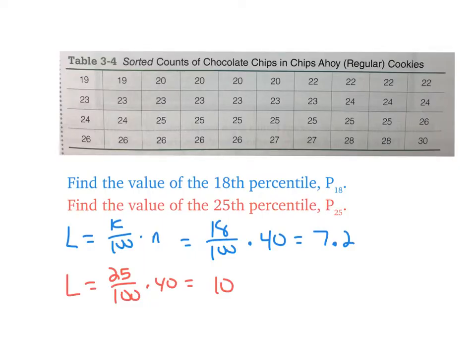Okay, this one says find the 18th percentile using the same chart. So I did 18 over 100 times 40, got 7.2. You need to round that 7.2 up. Even though it's 7.2, you're going to round it to 8. So I'm looking for the 8th value, which is 22. So 22 would be the value that holds the 18th percentile place, which tells you 18 percent of the cookies have fewer than 22 chocolate chips and 82 percent have more than 22.